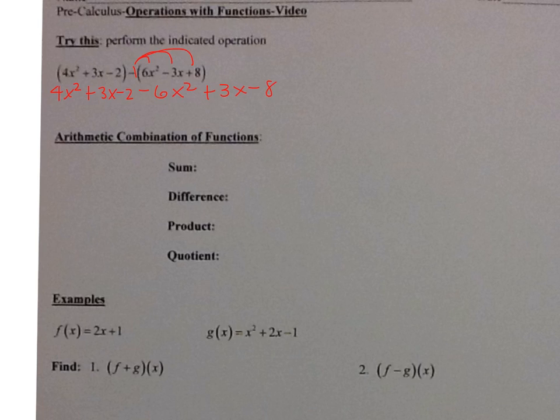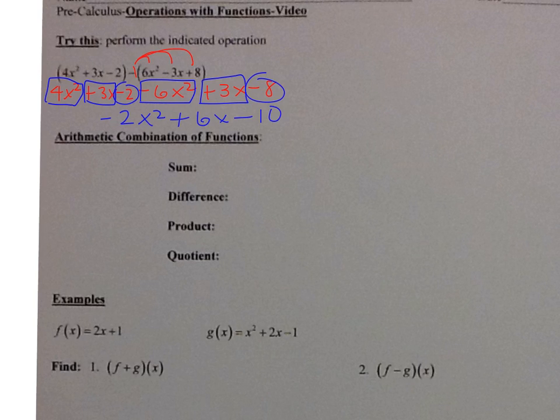And then we combine like terms. So I have 4x squared minus 6x squared is negative 2x squared, 3x plus 3x is 6x, and negative 2 minus 8 is negative 10. All right, so that's one of the things that we're going to be working on today.